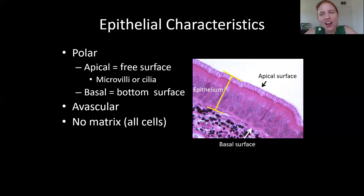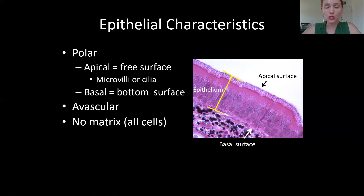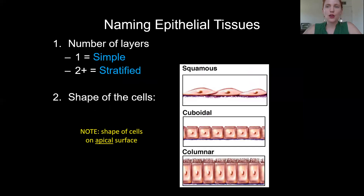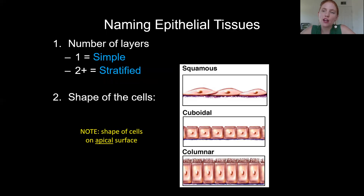If epithelial tissues are found at a surface, they need to be a good boundary, and you wouldn't make a good boundary with spaces in between. So you have tightly packed cells holding on to each other. To summarize: epithelial tissues have no matrix, no blood vessels, a difference between top and bottom, and once you see free space you've identified it as epithelial.